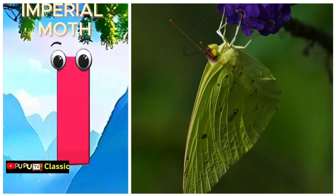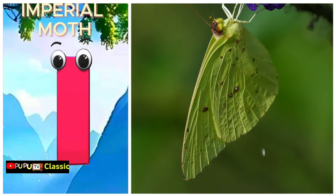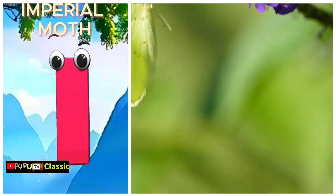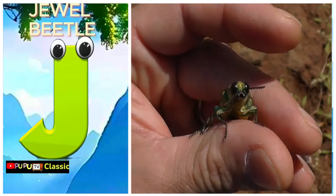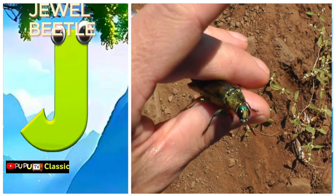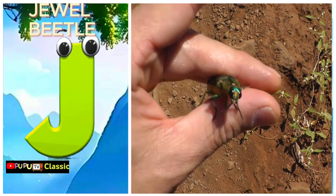I is for Imperial Moth. I. Imperial Moth. J is for Jewel Beetle. J. Jewel Beetle.